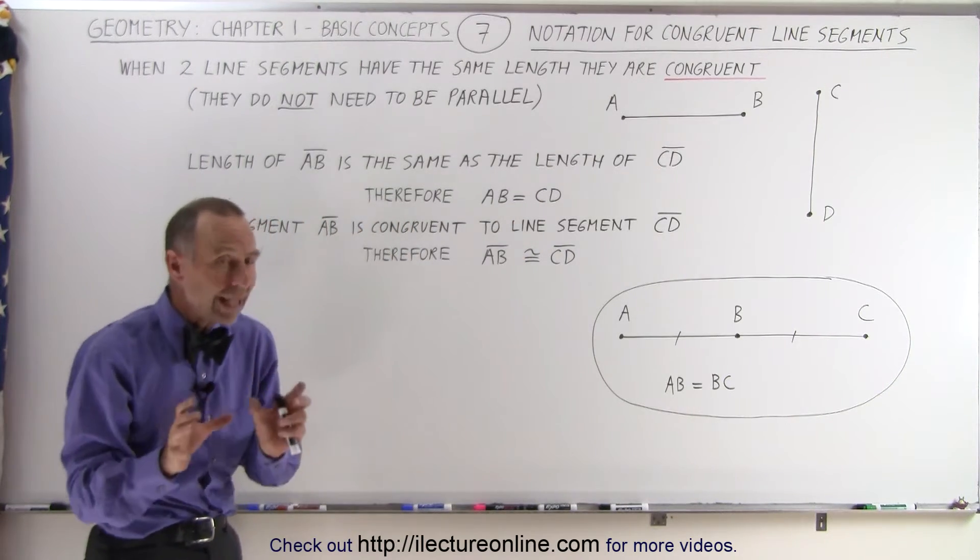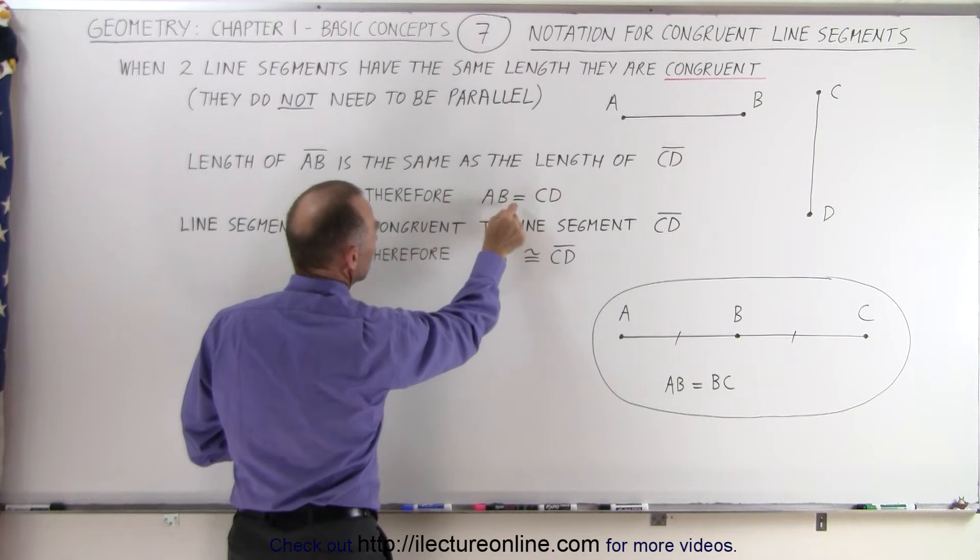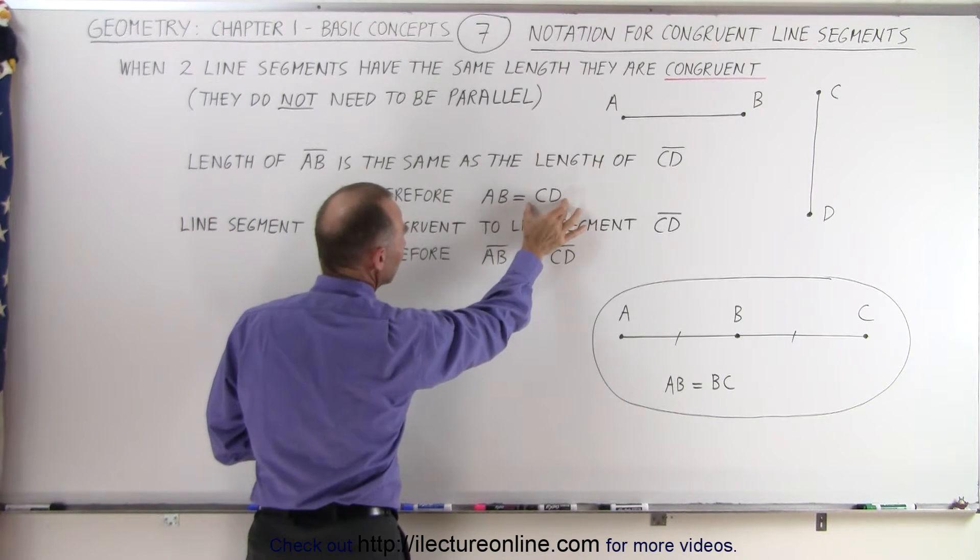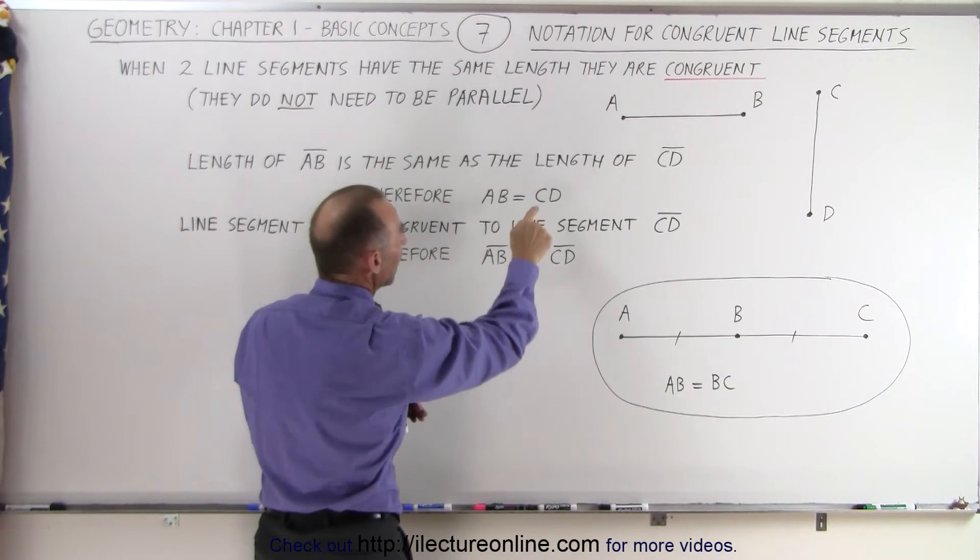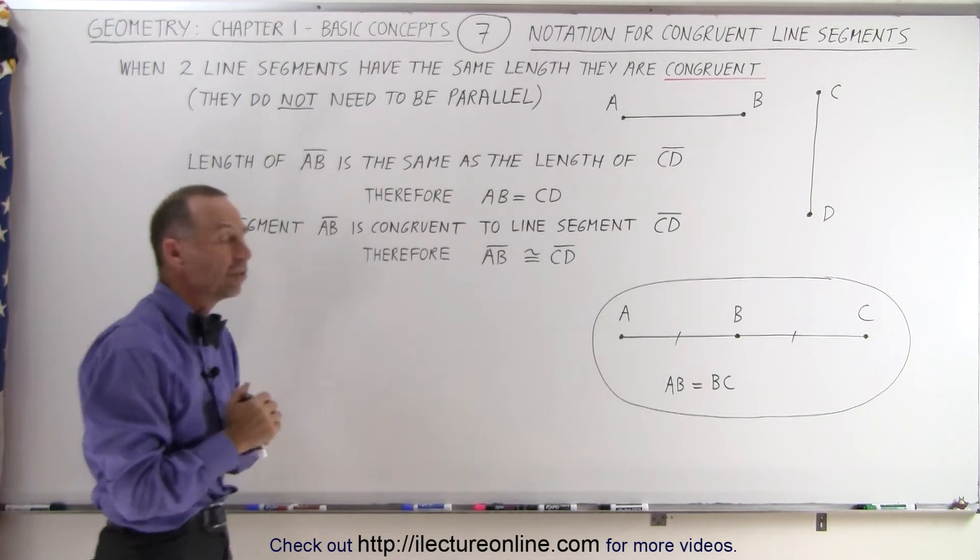When we write it like that, we mean the length of line segment AB equals the length of line segment CD. AB represents the length between A and B, and CD represents the length between C and D.